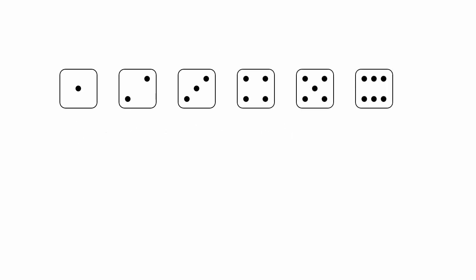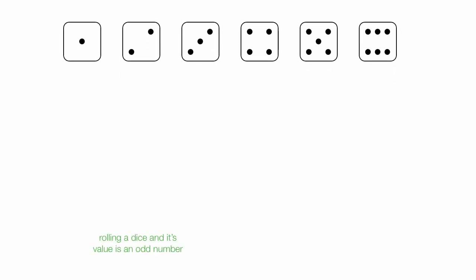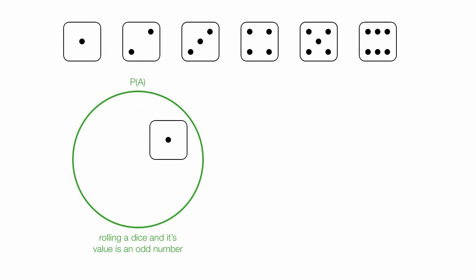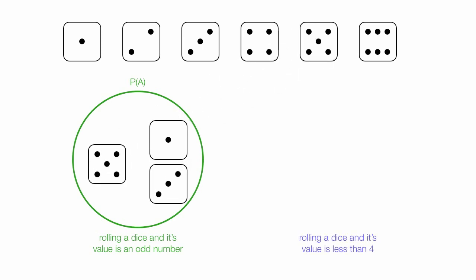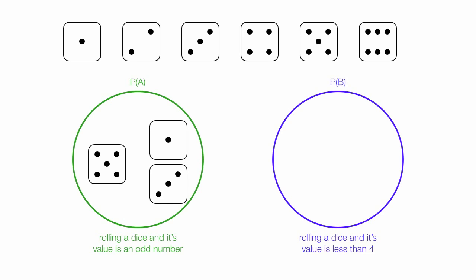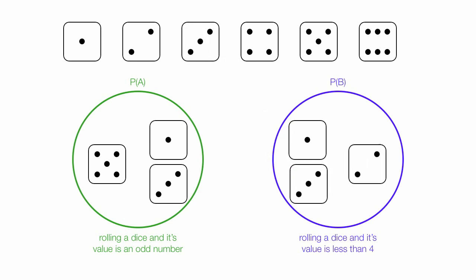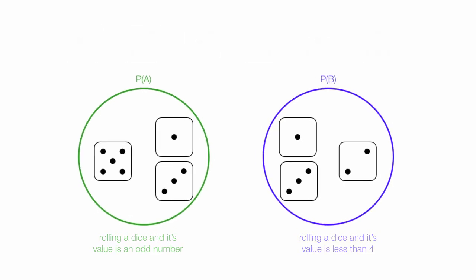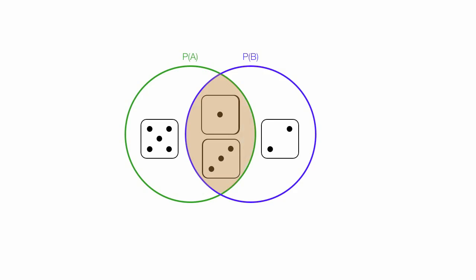Let me show this to you visually as well. Event A is rolling a die and its value is an odd number, so I'll put in the circle a 1, a 3, and a 5. The probability a dice is less than 4 is event B, so I'll put in there 1, 2, and 3. Now if I take these two events and find where they intersect — what they have in common — that's the brown area. I write that as the probability of A intersection B, and in this case they intersect 2 out of 6 times, or 2 sixths, which equals 1 third.